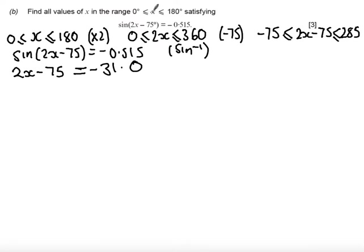This -31 may not appear to lie in the range we were originally given, but it is lying in the range for 2x - 75.